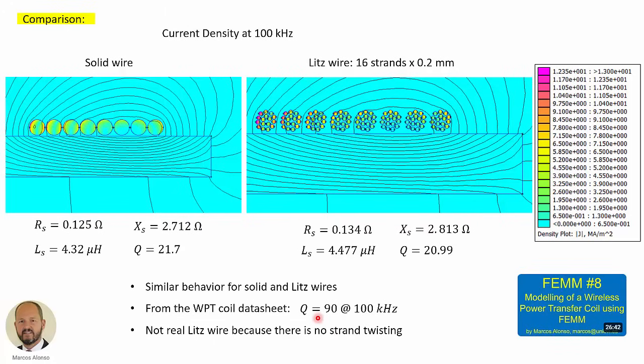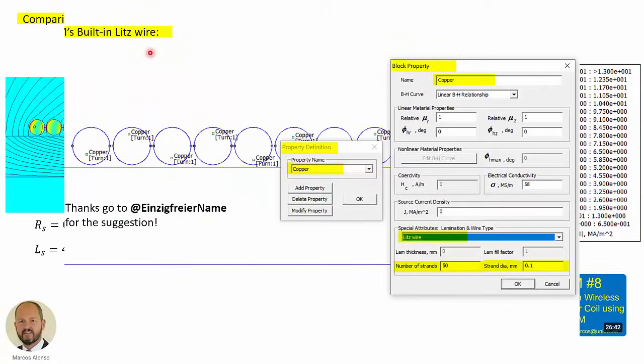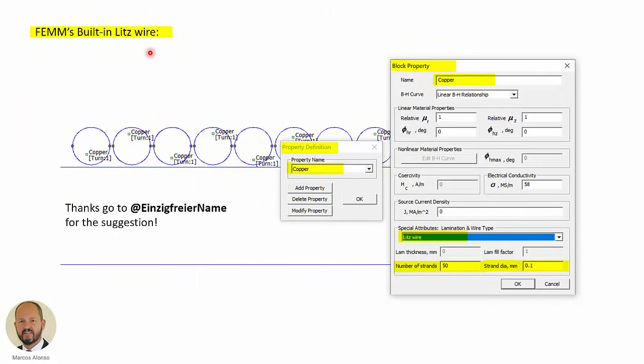And this is fundamental to get the effect of the Litz wire, the compensation in the distribution of the magnetic flux density in order to get rid of the proximity effect. So, today we are going to try another approach, which is using FEMM's built-in Litz wire. And I want to thank this viewer, Einzing Fryer name, for the suggestion, for pointing this out.